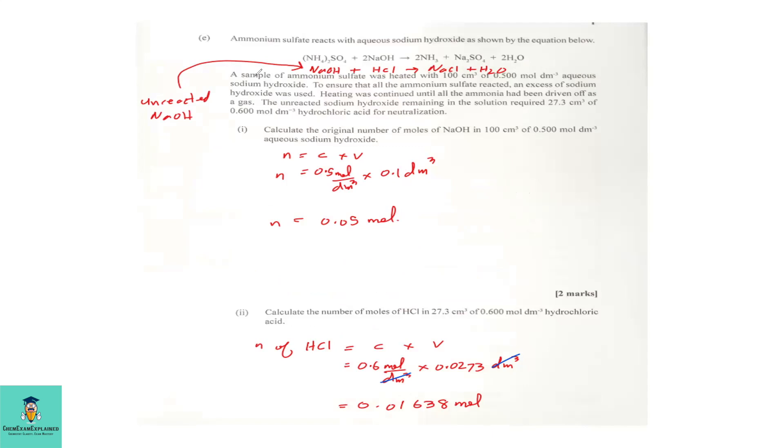Part E. Now, as I look at this question, the first thing I realize is that this is really a back titration question. Now, back titration is in unit 2, module 2. We are doing unit 1 questions. So, this question should really be a module 2, unit 2 question. However, let's continue. Ammonium sulfate reacts with aqueous sodium hydroxide as shown by the equation below.